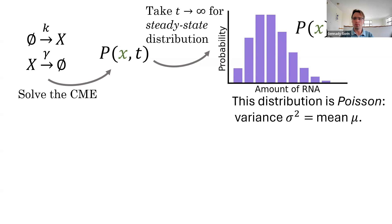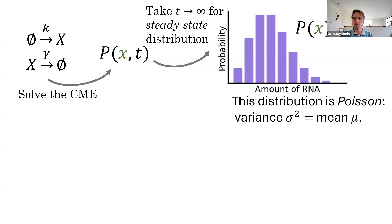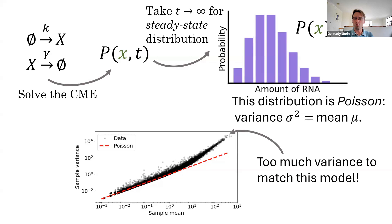And the steady state distribution is Poisson with variance, which is a measure of its spread, equal to the mean. If we look at real data, we don't see this. Instead, we see much higher variance across the board. So, somehow we need to account for this if we are having any hope of describing real data.